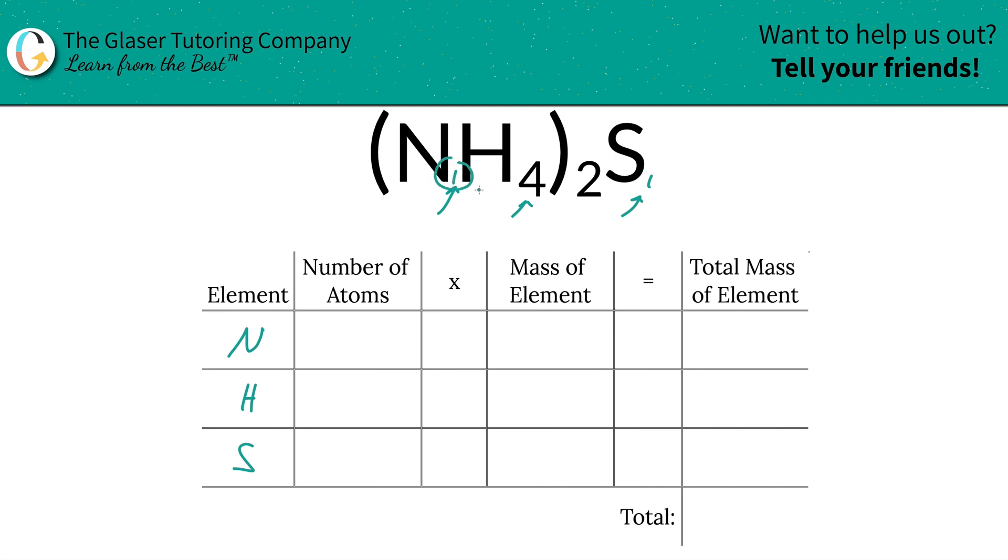Now nitrogen, there is one nitrogen, yes, but nitrogen is part of that polyatomic anion ammonium, and you have two ammoniums, and therefore you'd have two nitrogens. In other words, take the inner subscript and multiply it by the outer subscript to find the total. So there's two nitrogens. Same thing for hydrogen. Take the inner subscript of hydrogen, multiply it by the outer, so you have eight hydrogens, and then sulfur, you have one.